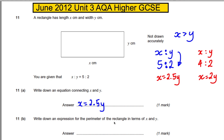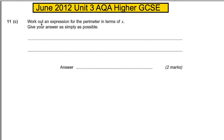Write down the expression for the perimeter of the rectangle in terms of X and Y. That side is clearly X and that side is clearly Y, therefore the perimeter must be 2X + 2Y.